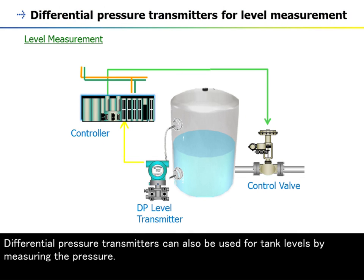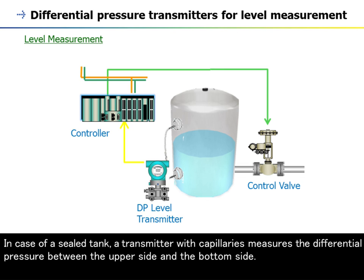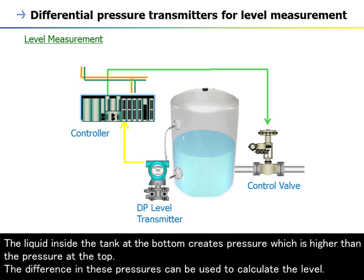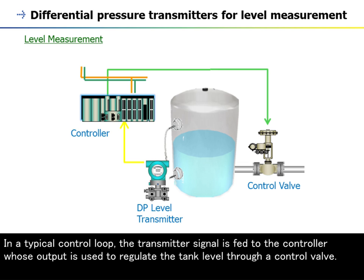Differential pressure transmitters can also be used for tank level measurement by measuring pressure. The transmitter is installed at the bottom of the tank whose level is to be detected. In the case of a sealed tank, a transmitter with capillaries measures the differential pressure between the upper side and the bottom side. In the case of an open tank, the transmitter measures the differential pressure between the liquid inside the tank and the reference atmospheric pressure. In a typical control loop, the transmitter signal is fed to the controller, whose output regulates the tank level through a control valve.